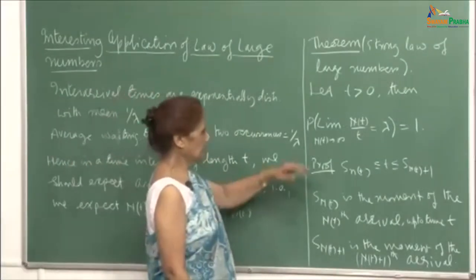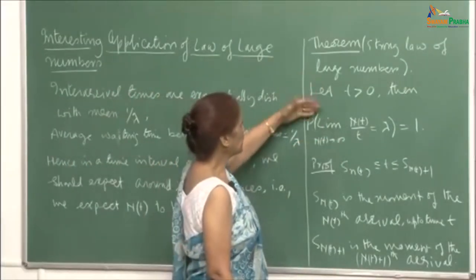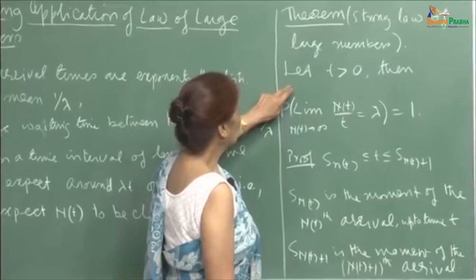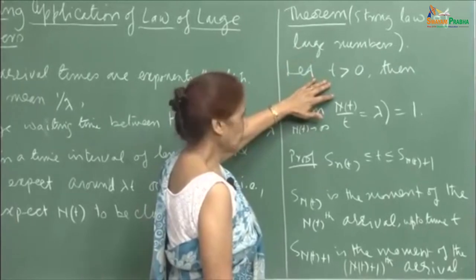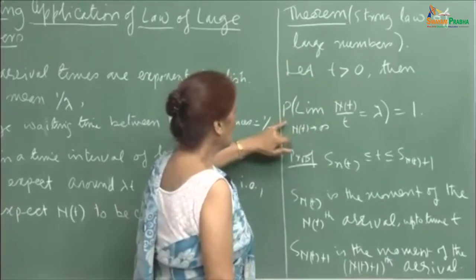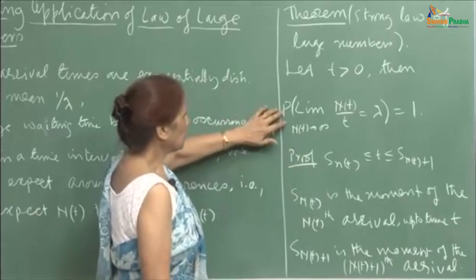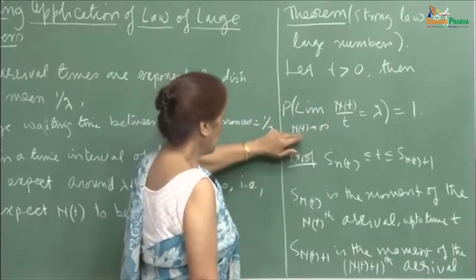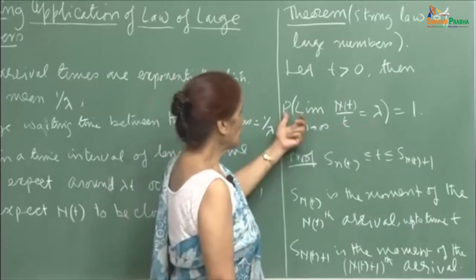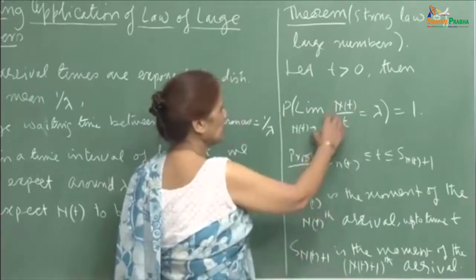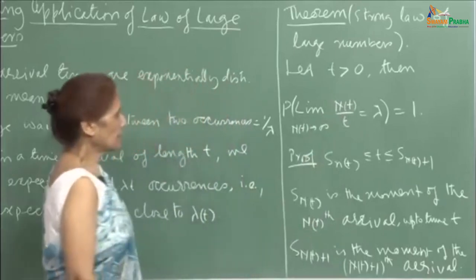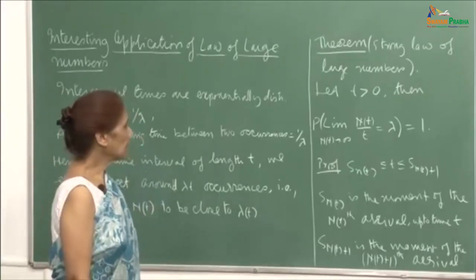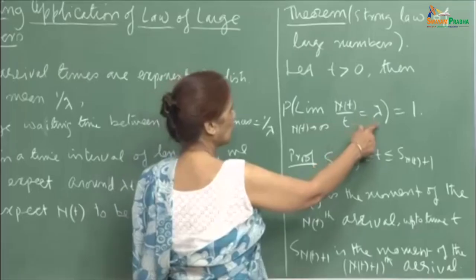Let us look at the proof. For t some positive time, we want to show that the limit of N(t)/t as N(t) goes to infinity is equal to λ. This probability is 1, meaning this is a certain event. As you take the limit and allow N(t) to grow large, your ratio N(t)/t would be λ.